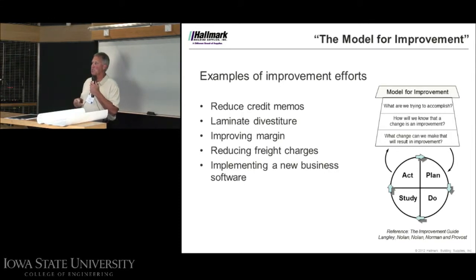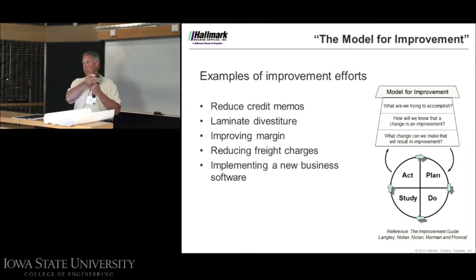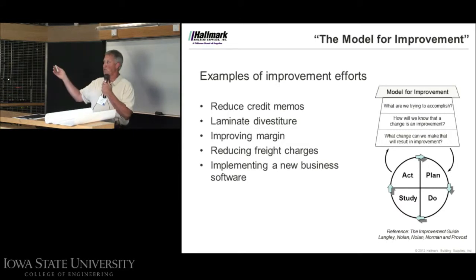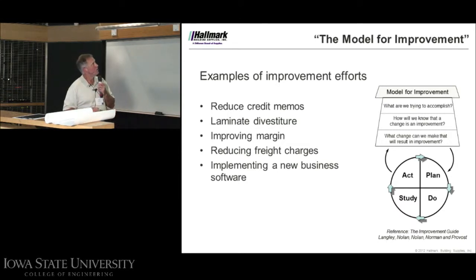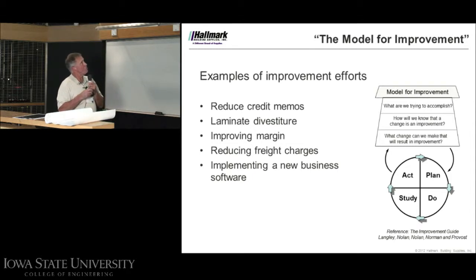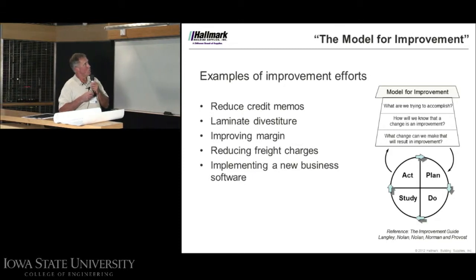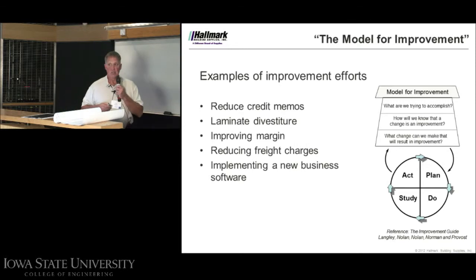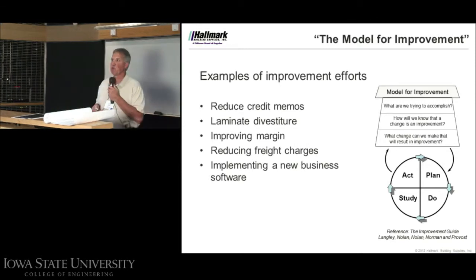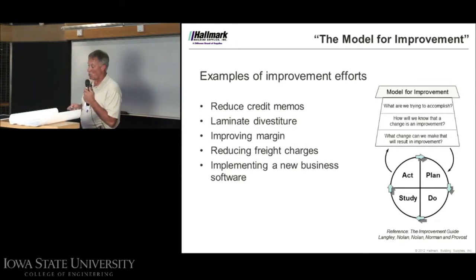That gave us a place to start grabbing some of that low-hanging fruit, taking costs out of the system — which was that 25 to 40% of our expenses. That's where we started. A divestiture I mentioned before was a laminate line. We're currently working to improve margins, reducing freight charges, and working on a software implementation. These are some improvement efforts going on as we speak.